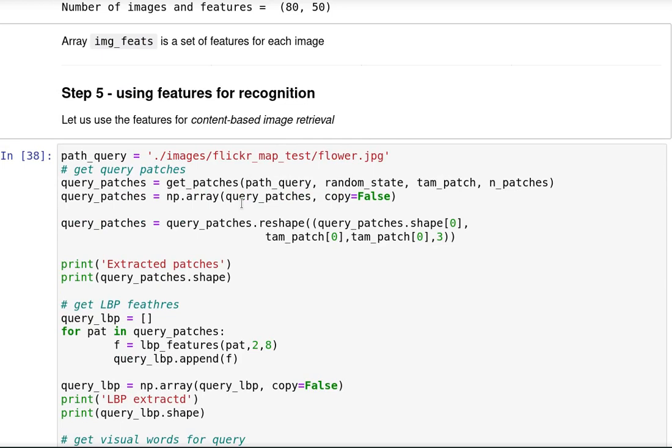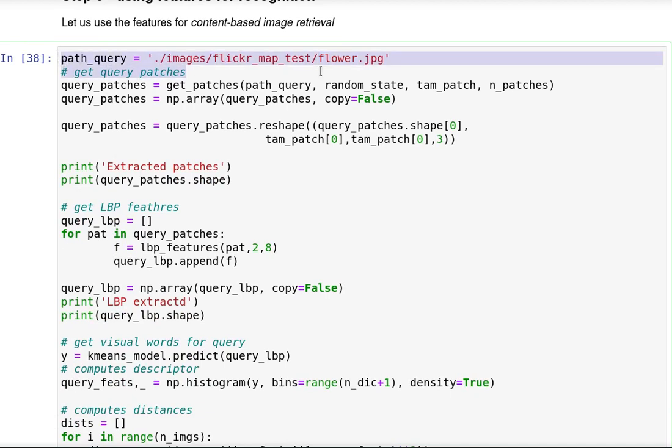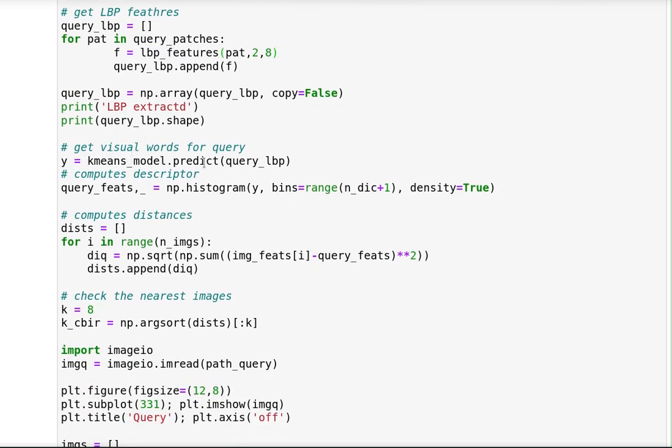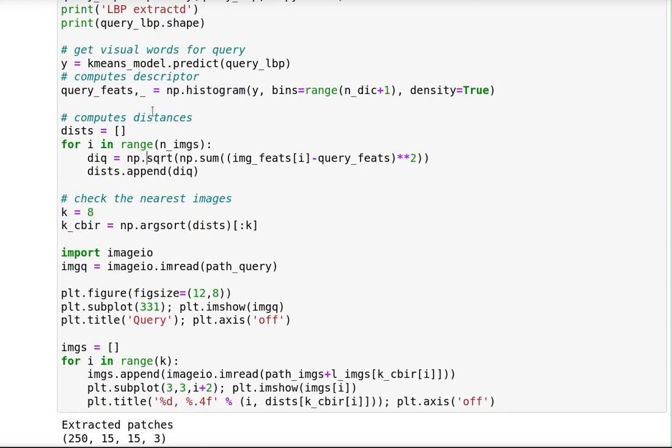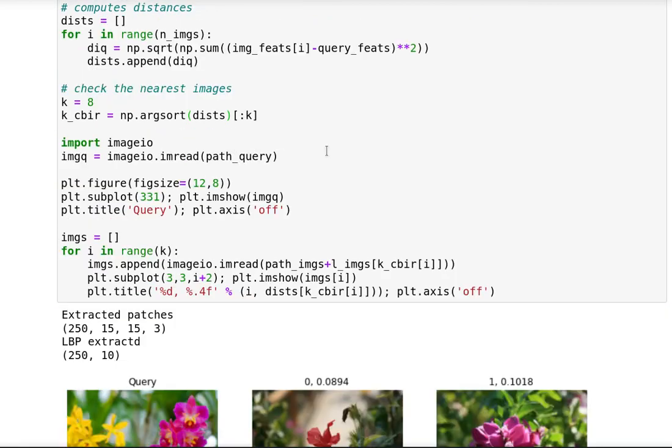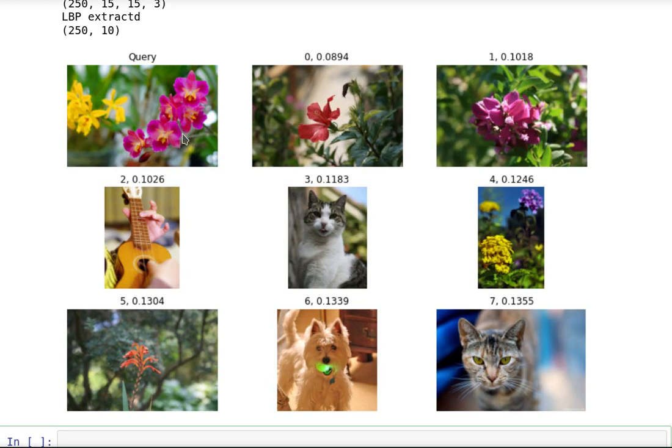We can use those features for recognition. Let's use them for content-based image retrieval. I'm going to define a query image and then do all the steps we did for training images: get the patches, reshape the array, get LBP features for each patch using the same parameters. Then using the k-means model we learned before, we predict the visual words for each patch and compute the descriptor. Finally, I compute distances between the query features and every image in the training set and check for the nearest images.